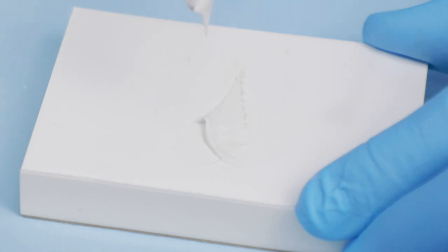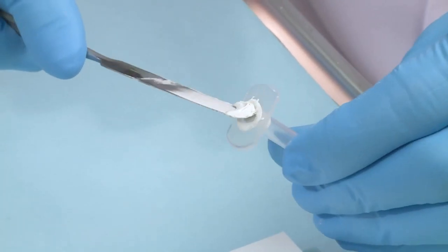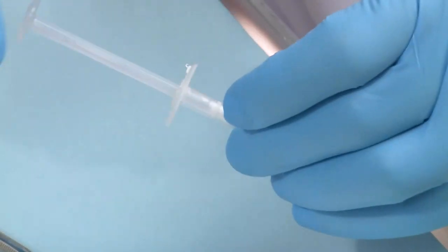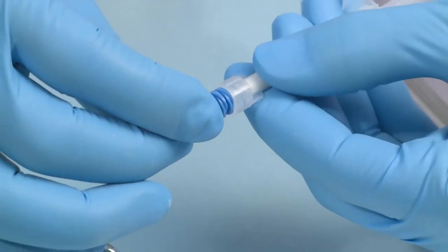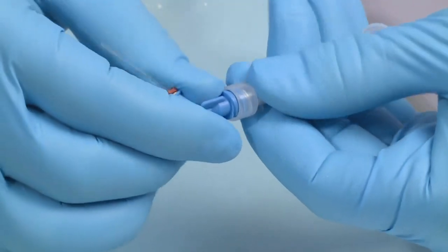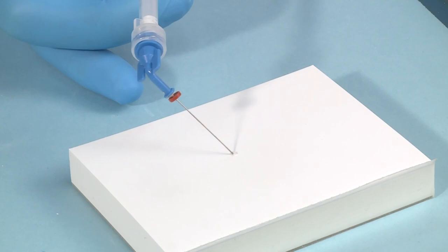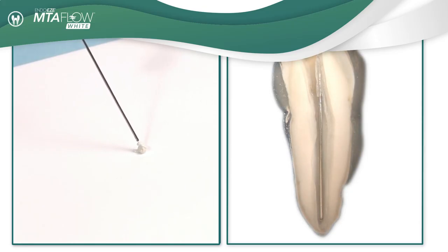Mix to a smooth consistency, insert the mixed MTA Flow into the back of the skinny syringe, reinsert the plunger, and choose the desired tip needed. We suggest the use of the Ultradent NaviTip 29 gauge tip to accurately deliver the MTA Flow inside the canal.